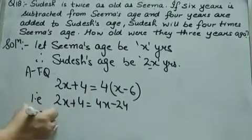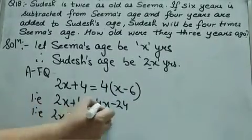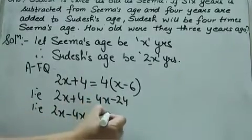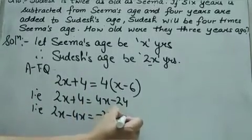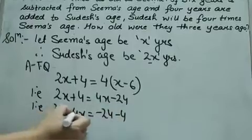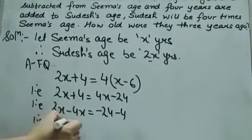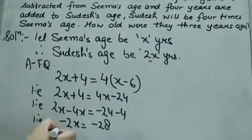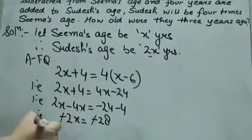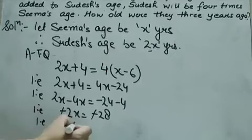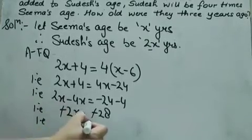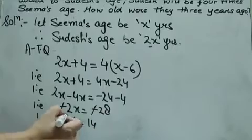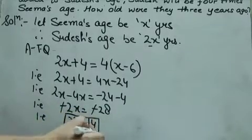Bring the X terms to one side: 2X minus 4X. Take the constant terms to the other side: 24 minus 4. Here we have minus 2X equal to minus 28. The negatives on both sides cancel out. Dividing 28 by 2, that is 14. So X equals 14.